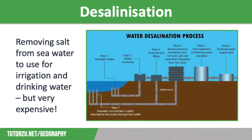The desalination process begins with seawater intake, where seawater is slowly drawn in from the ocean — a protective grill prevents marine life from entering. Stage two is pre-treatment filtration, where solids such as sand are removed. The water then goes through reverse osmosis, where filtered seawater is pushed through ultra-fine membranes under high pressure. Fresh water passes through, leaving seawater concentrate behind.